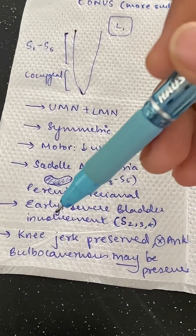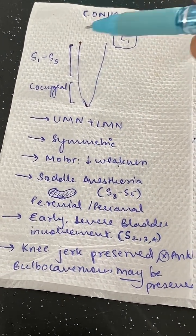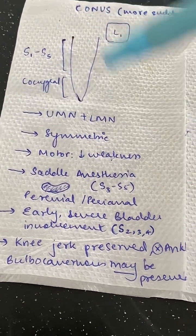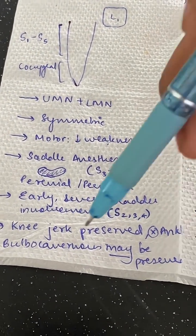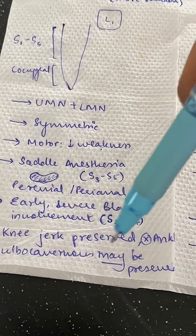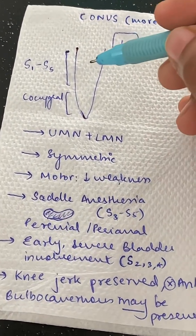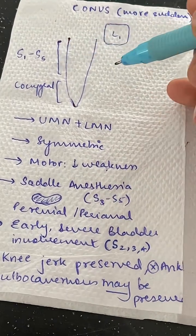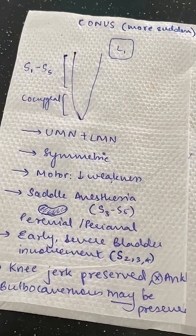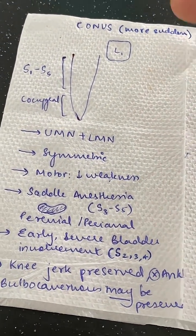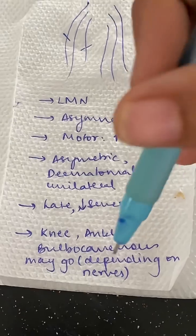Coming to reflexes in conus: knee jerk is preserved because knee jerk is L3-L4, and L3-L4 are not affected here. Ankle jerk might be gone. Bulbocavernous reflex may be present in certain cases — if the transaction is below the reflex arc, it may be present, but it's usually not present.